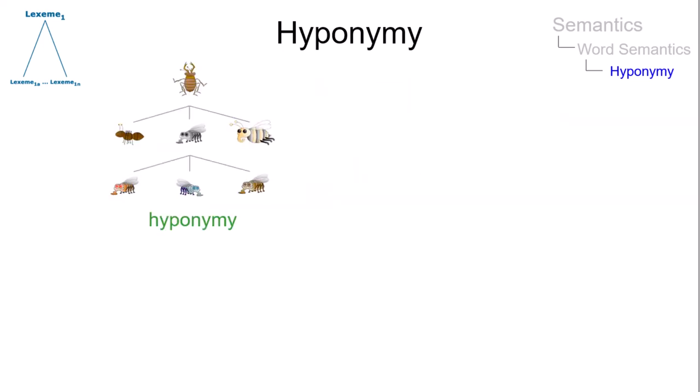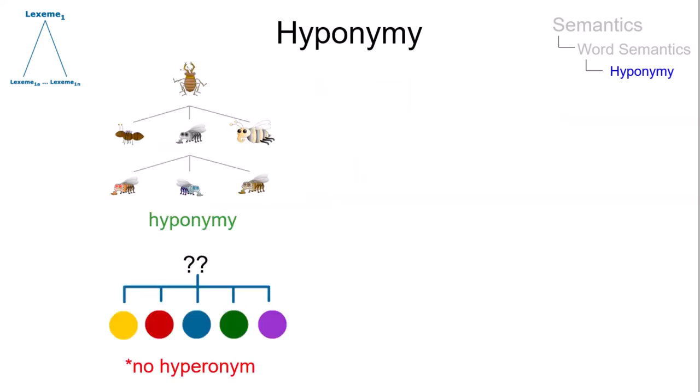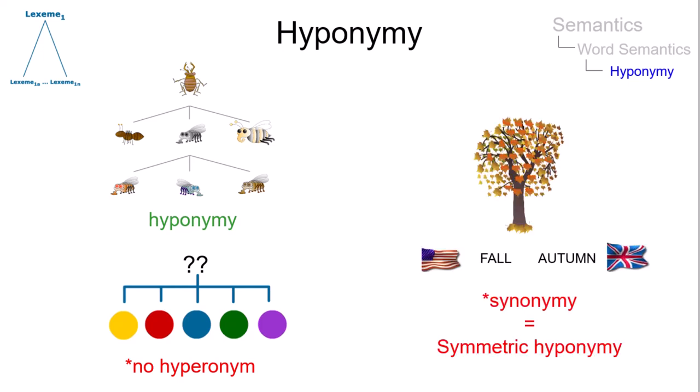Oddly, there are sets of elements — for example, the colour words — for which no superordinate term can be found. And some linguists include the relationship of synonymy within hyponymy, defining it as symmetric hyponymy, where A is a hyponym of B and B is a hyponym of A.